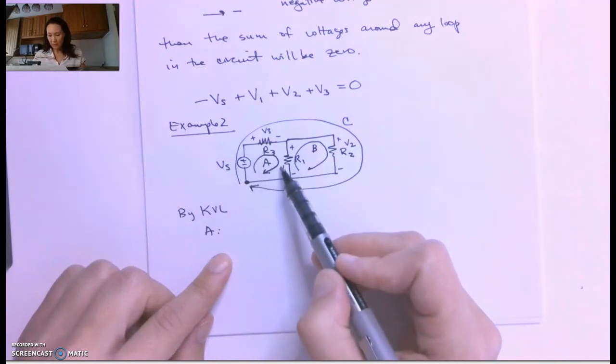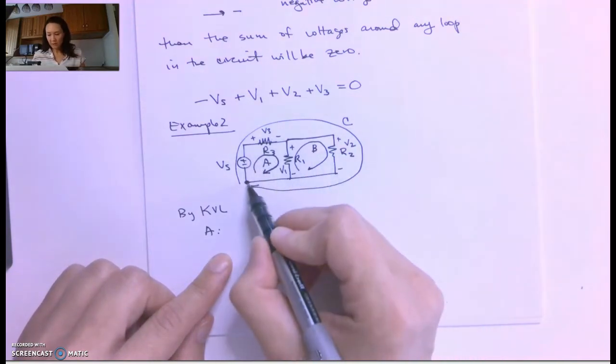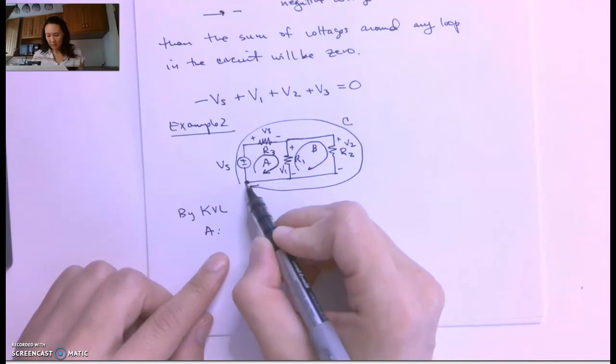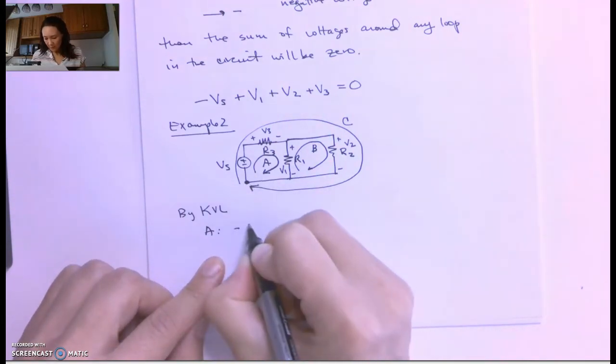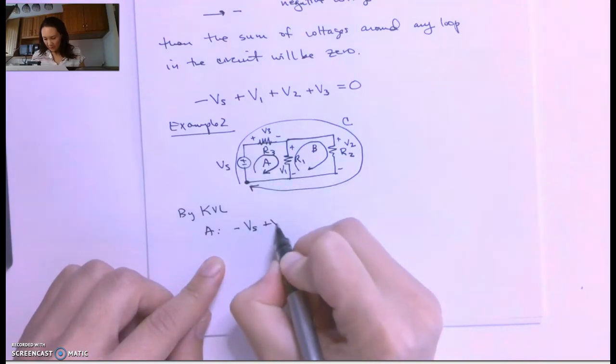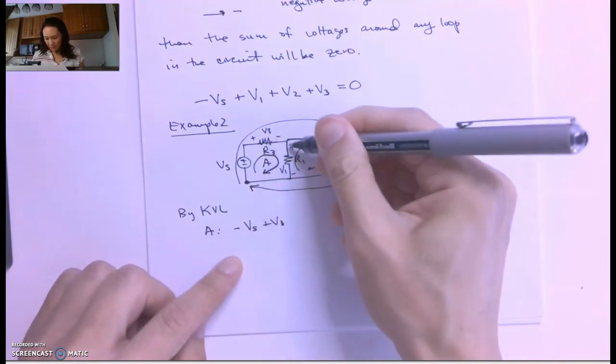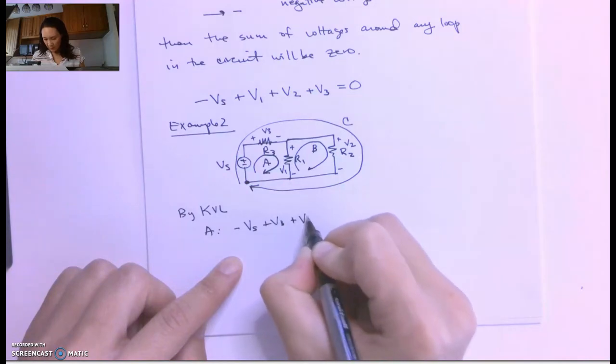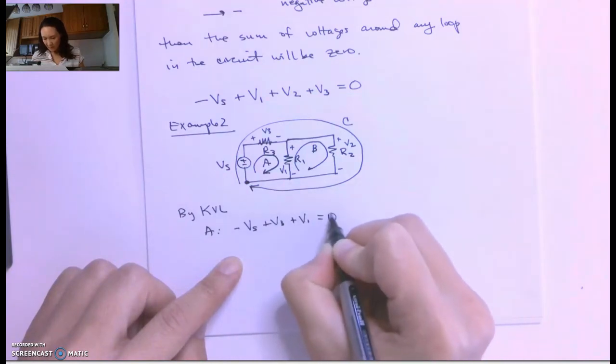So for the A loop, that's just going to be this one here. Starting at this bottom corner, I'm going to enter VS through the negative side. I'm going to enter V3 through the positive side. I'm going to come around. I'm going to encounter V1 from the positive side. And that's going to be zero.